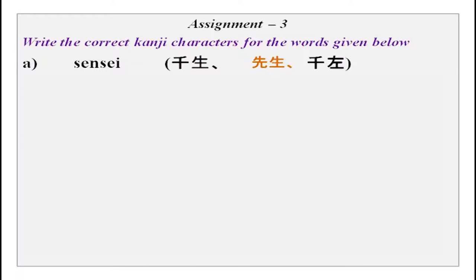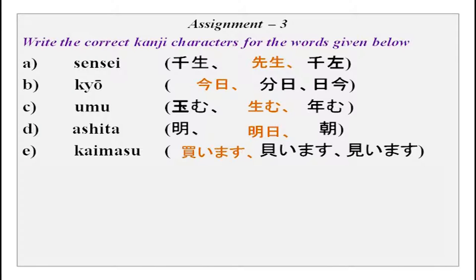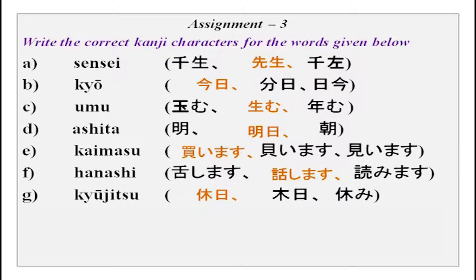Now we have some kanji practice. The first word is sensei. Then we have kyo. Then umu — these two look very similar but are very different. Umu means to be born; this character means to give birth. Then ashita, kaimasu — these two also look similar but are different. Hanashimasu. Kiujitsu is a yasumi day — a holiday.